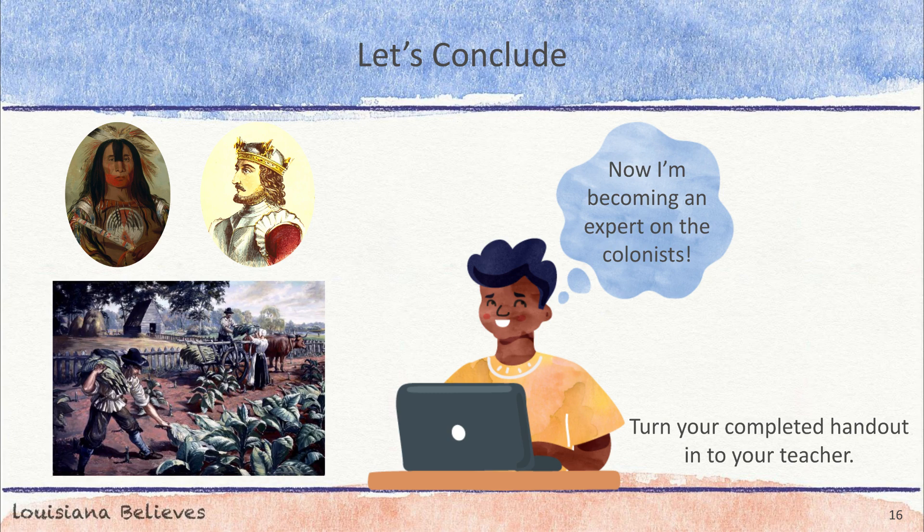You have learned how North America was settled by colonists from Europe and why many colonists began to wonder if they would be better off without a king telling them what to do. You will use this knowledge as you engage with the guidebook unit, the American Revolution. When you finish this video, be sure to turn in your handout to your teacher.